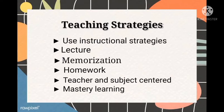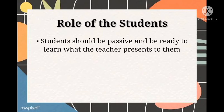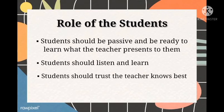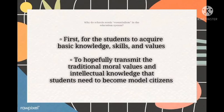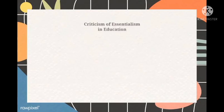Now let's move on to the students' part — what are the students' roles? Students should be passive and be ready to learn what the teacher presents to them. Students should listen and learn, and should trust that the teacher knows best. The goal is for students to acquire basic knowledge, skills, and values, and to transmit traditional moral values and intellectual knowledge so that students can become model citizens.